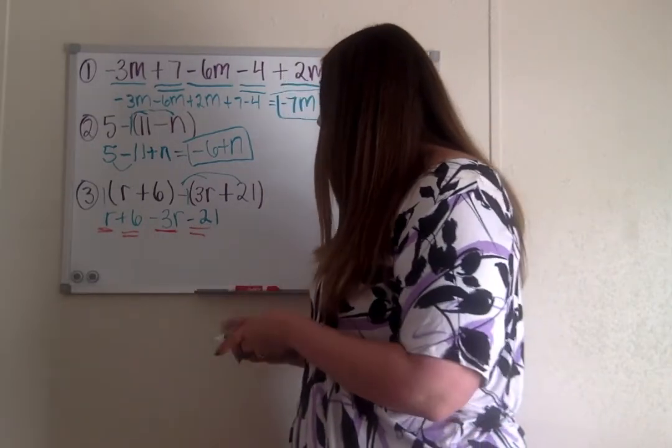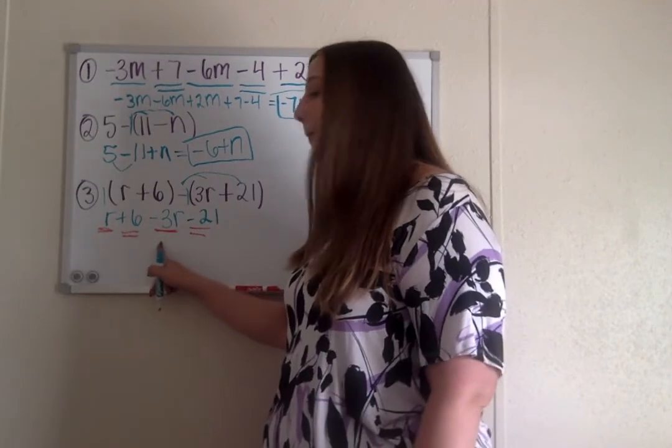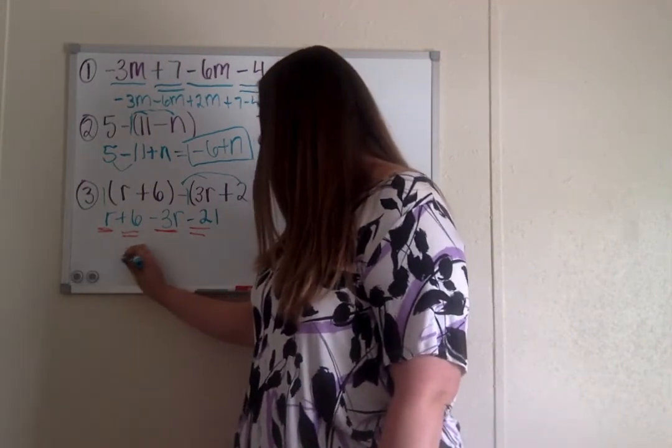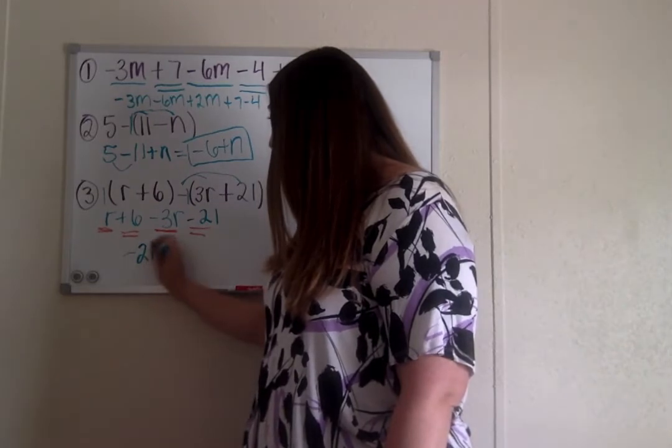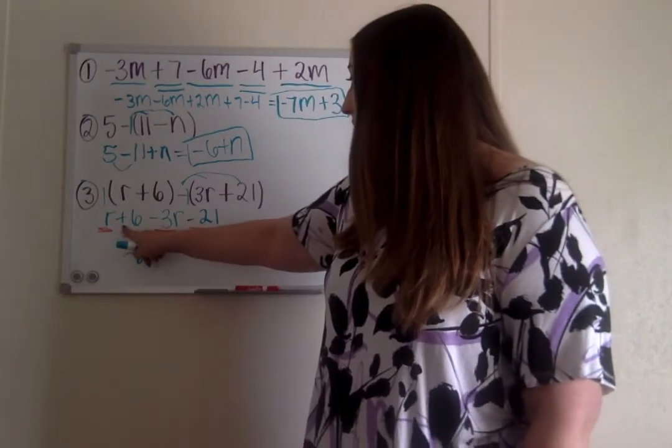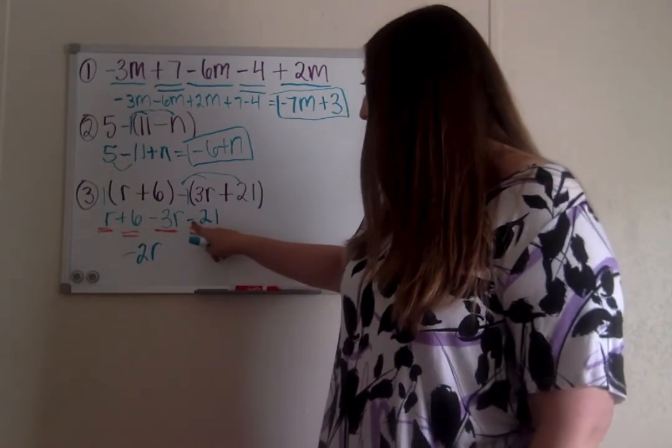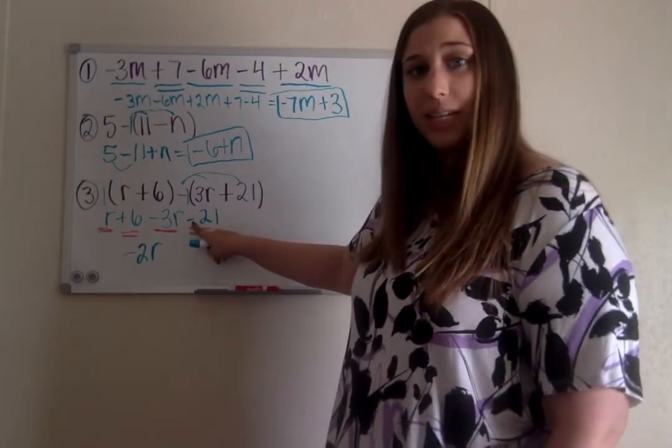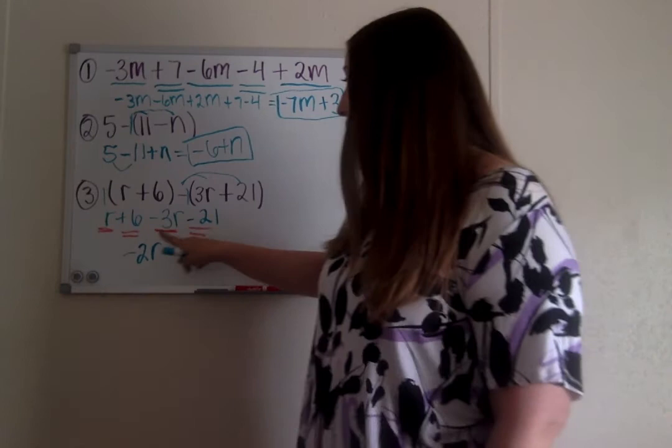So again, looking at these like terms, r minus 3r that gives us negative 2r. Then our other like terms is a positive 6 and minus 21. We keep the signs in front of our numbers, so we have 6 minus 21, which gives us negative 15.